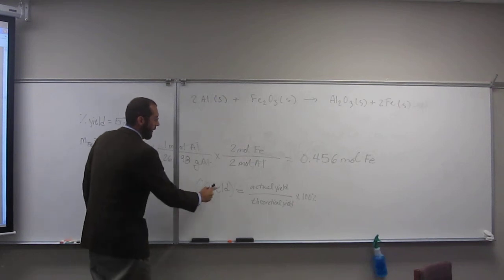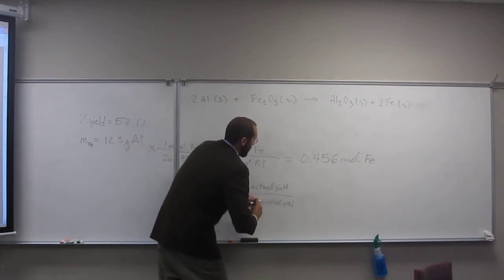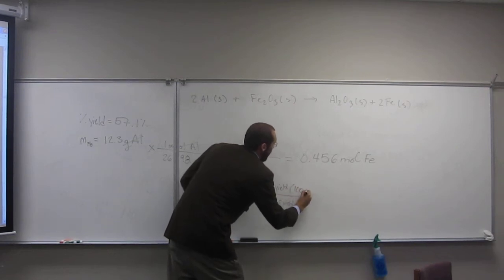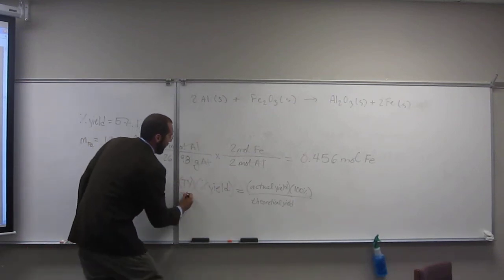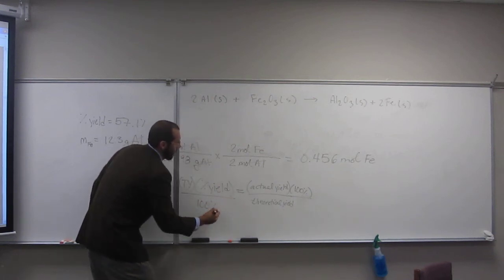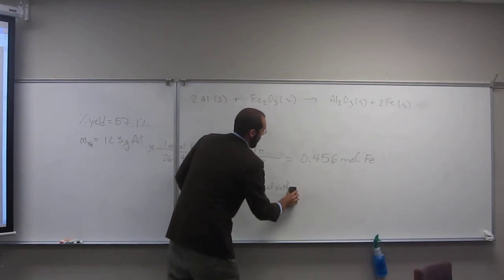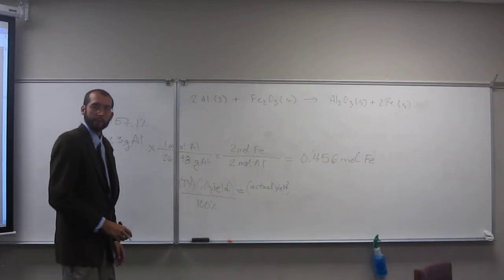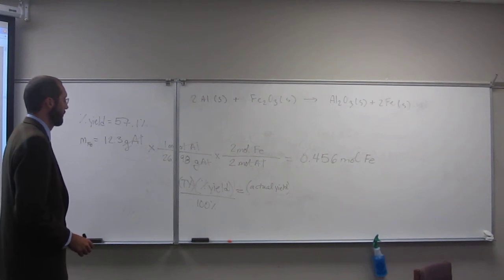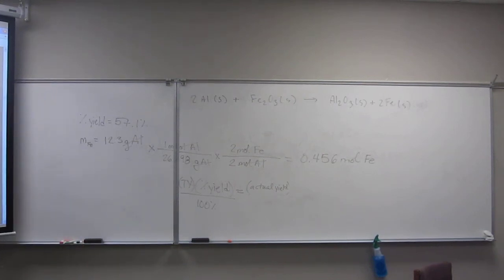So percent yield. Let's do it this way so it makes it easier for you guys. So percent yield times, I'm just going to put theoretical yield like that, divided by 100%. Cancel that. That gives us our actual yield. Is everybody okay with that? When you do times the percent yield, is it 57.1 or .571? What is it? 57.1. How come it has to be? Because of the percent. You've got to cancel all your units.